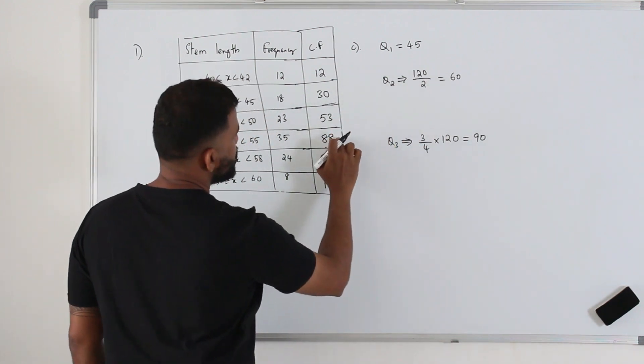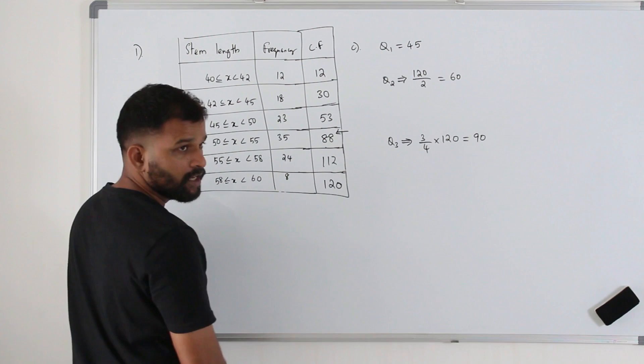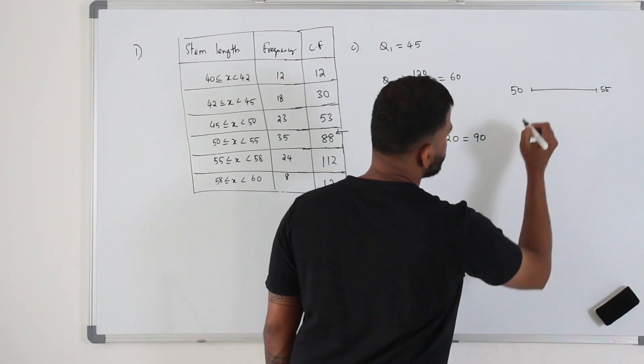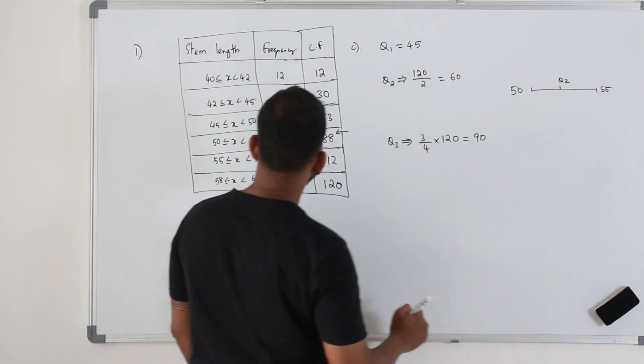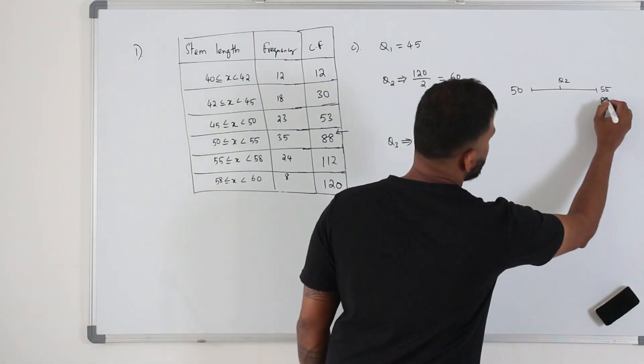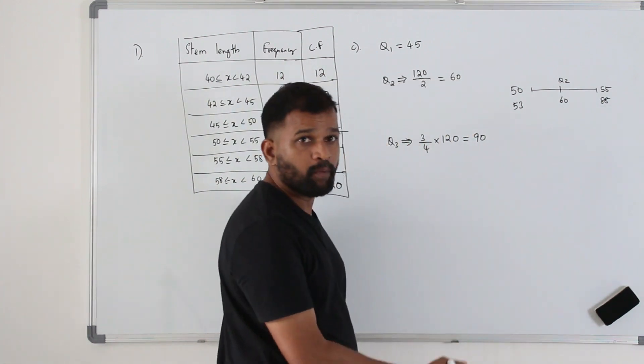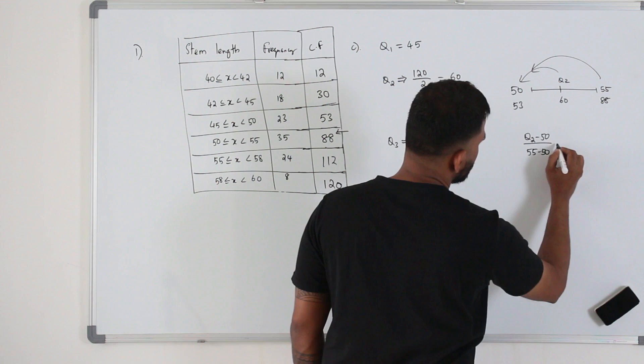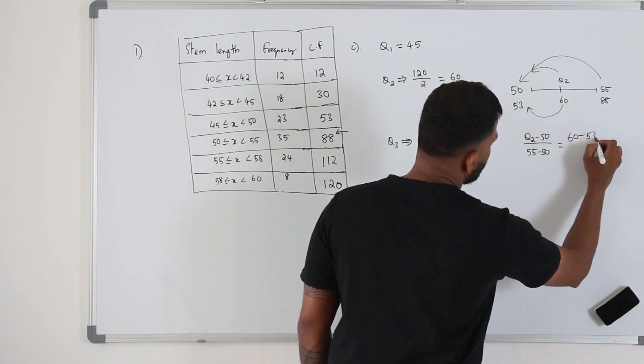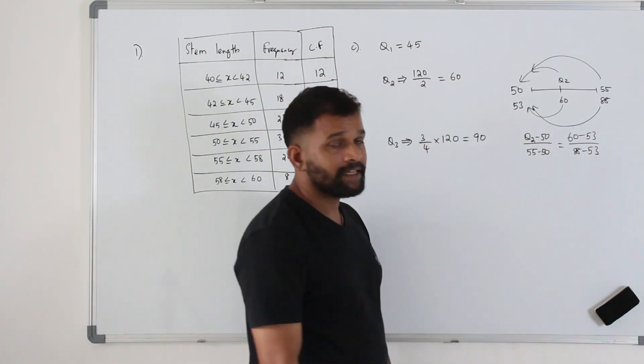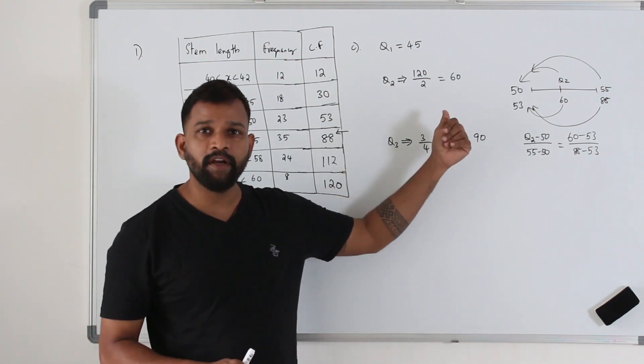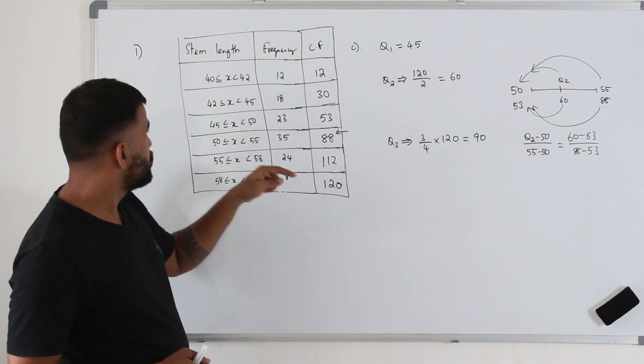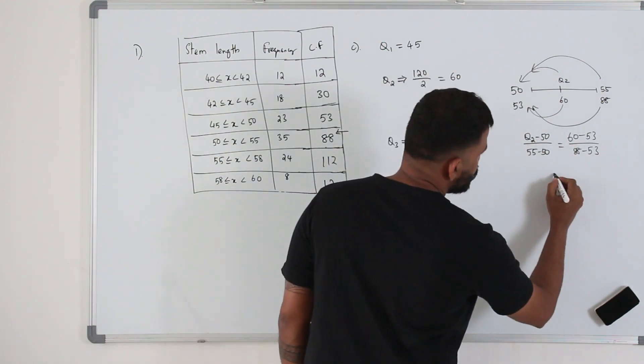First you find these values and check where these values lie in the cumulative frequency. First for Q2, 61 lies in here. Anything more than 53 till 88 lies in here. So take the corresponding class interval. So you will get 50 to 55. And then your Q2 should be in between here. Take the corresponding cumulative and the previous cumulative, 88, 53 here. Your 60 lies in here. Now apply linear interpolation. Q2 minus 50, divided by 55 minus 50, equals 60 minus 53 over 88 minus 53. That's the linear interpolation method. Now make Q2 as a subject here.